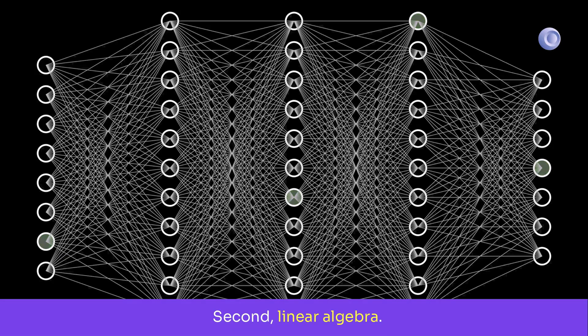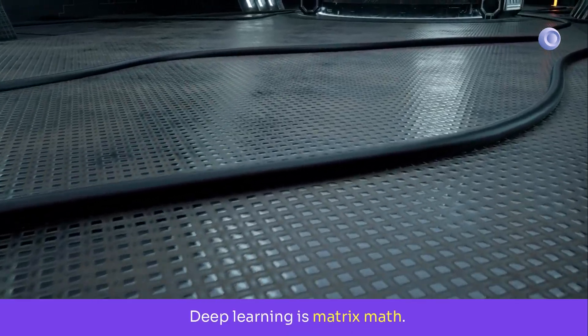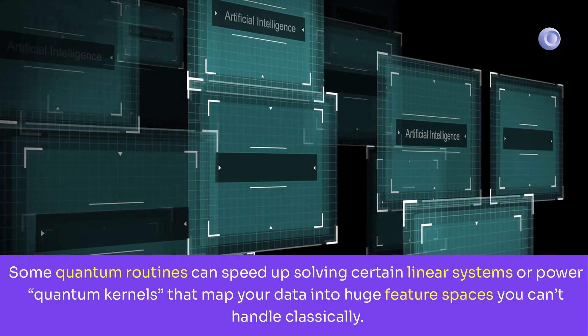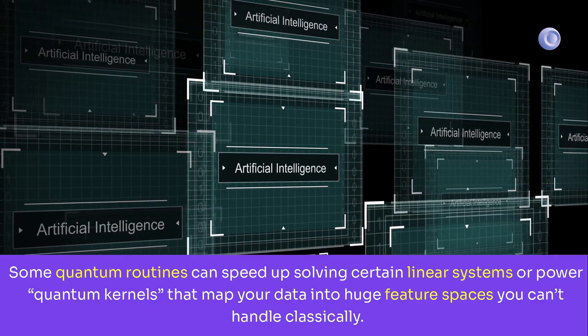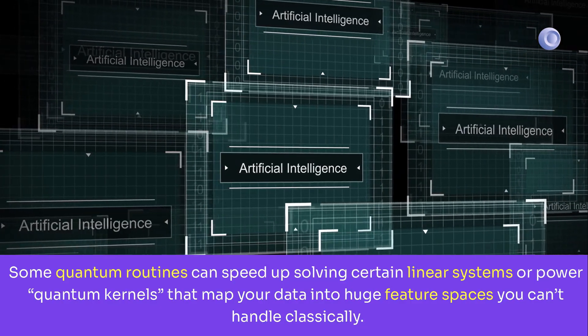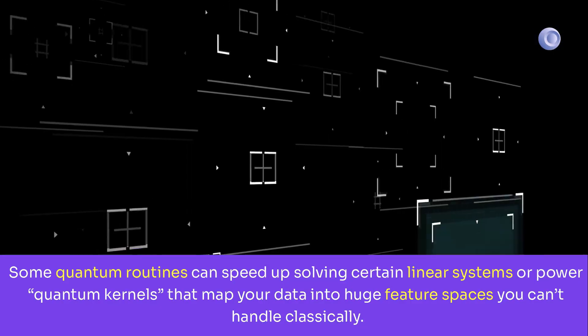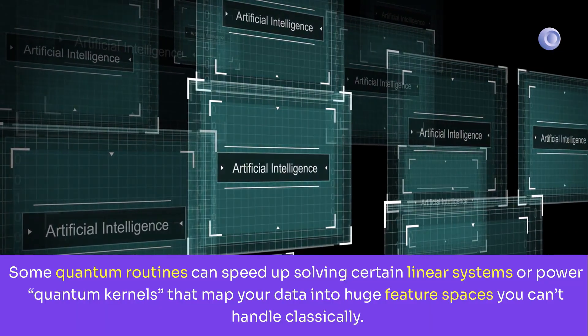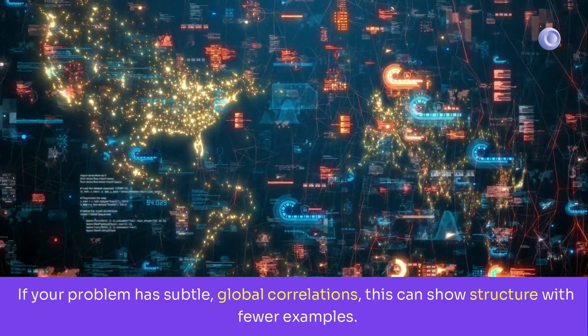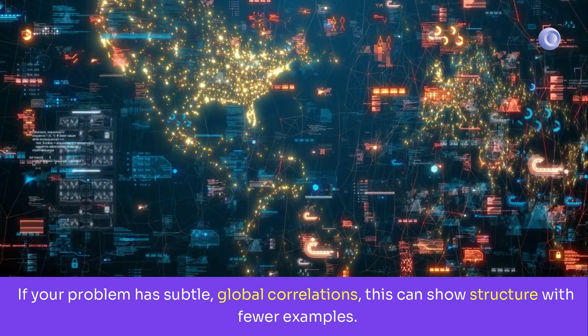Second, linear algebra. Deep learning is matrix math. Some quantum routines can speed up solving certain linear systems, or power quantum kernels that map your data into huge feature spaces you can't handle classically. If your problem has subtle global correlations, this can show structure with fewer examples.